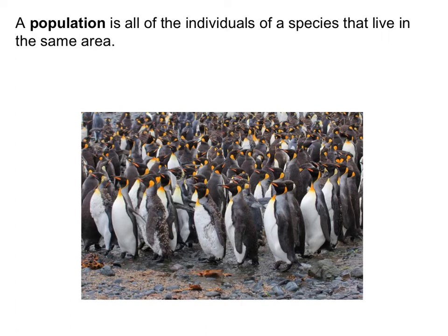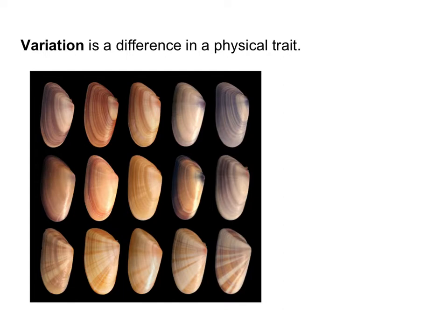A population is all the individuals of a species that live in the same area. We need to define the population by area — so you could have the population of penguins in the entire world, or the population of penguins on a single island.